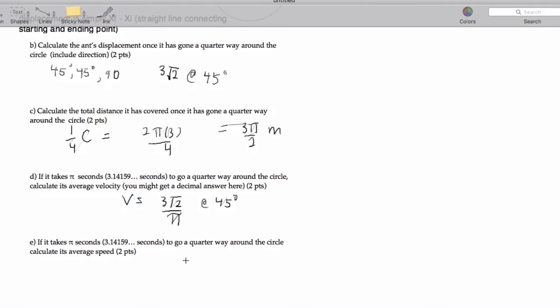And then it says it takes pi seconds to a quarter way around the circle. Calculate its average speed. Remember, average velocity is displacement over time, and average speed is distance over time. So that's going to be a quarter of the circumference, which we got as 3 pi over 2 divided by pi. And the pi's cancel. And so I'm getting 3 halves meters per second.